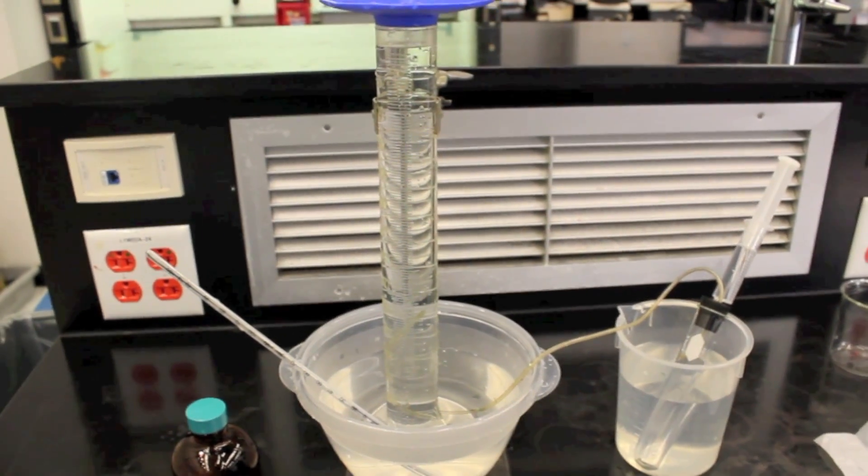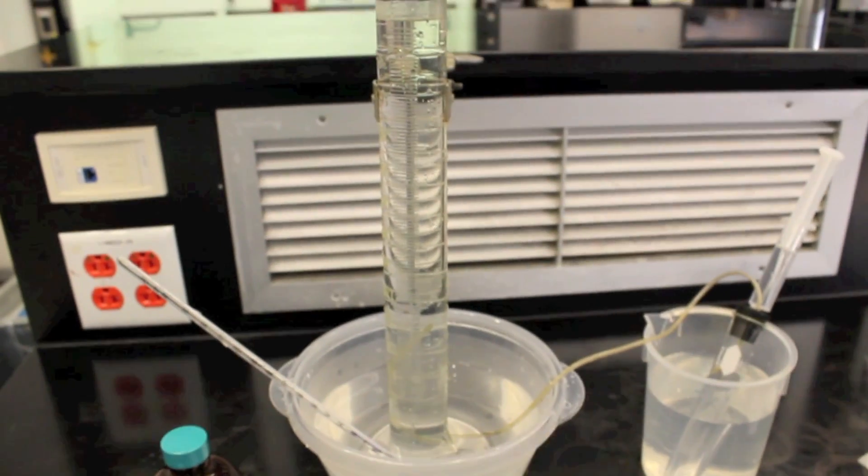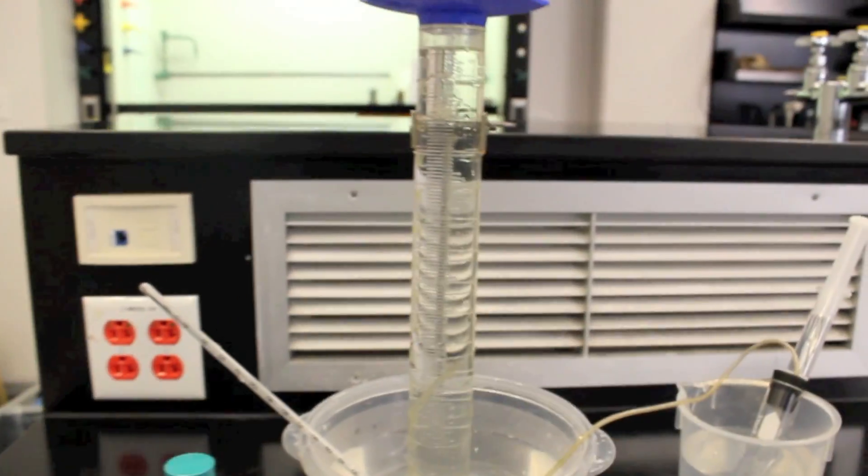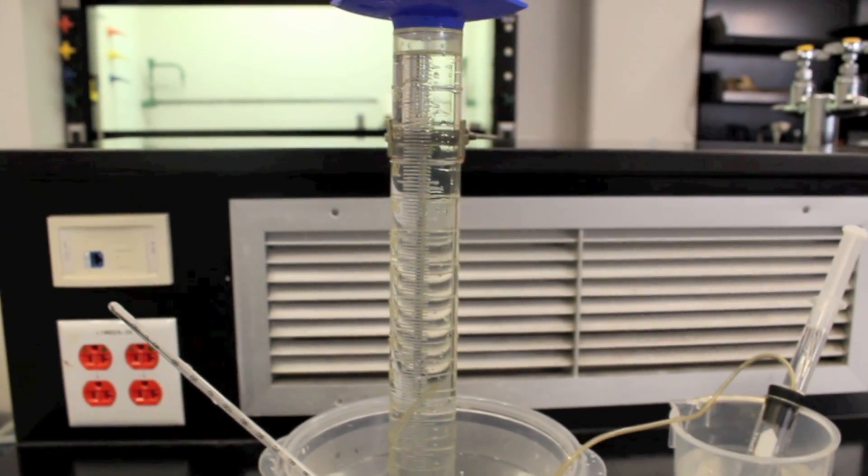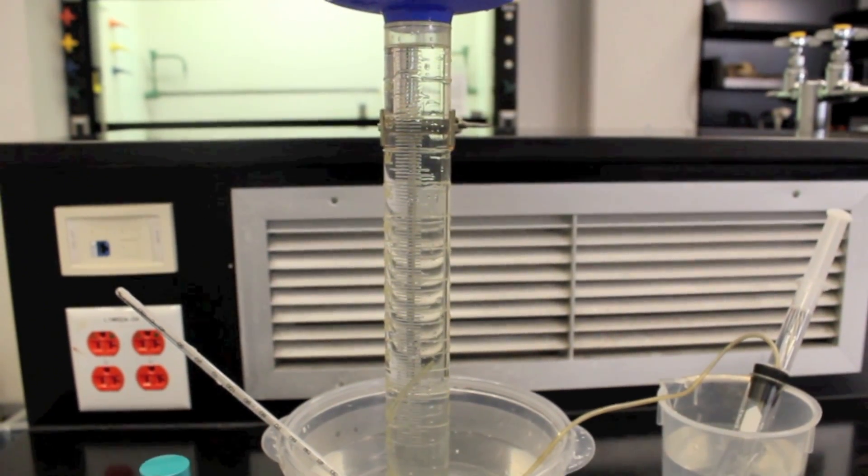Be sure to record the initial volume to one significant figure higher than the graduated cylinder offers. Place the thermometer into the plastic bowl and make sure the test tube is in a water bath because the reaction is exothermic and generates heat.